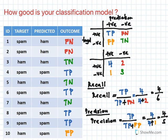So recall is supposed to be as high as possible. Precision tells you, from all the positive classes that you have predicted correctly, how many are actually positive.